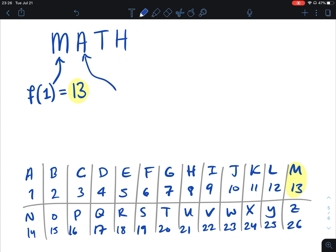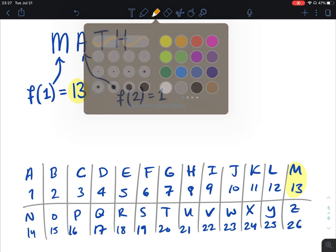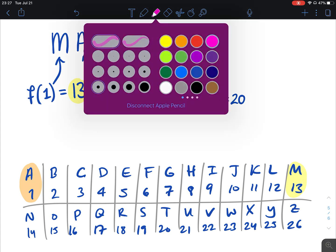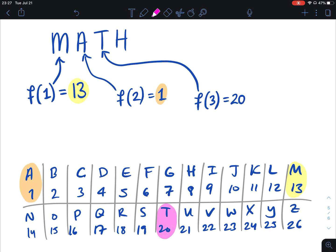Similarly, if I plug in the second letter of the word math, I should get back 1, because a corresponds to the first letter in the alphabet. Then if I plug in 3, I should be getting back whatever t corresponds to in terms of number. So t we can see is the 20th letter of the alphabet. So f of 3 will equal to 20. So last but not least, you can tell it looks like when we plug in 4 for the fourth letter of the word math, we should get back 8, because h is the eighth letter of the alphabet. So f of 4 will equal to 8.